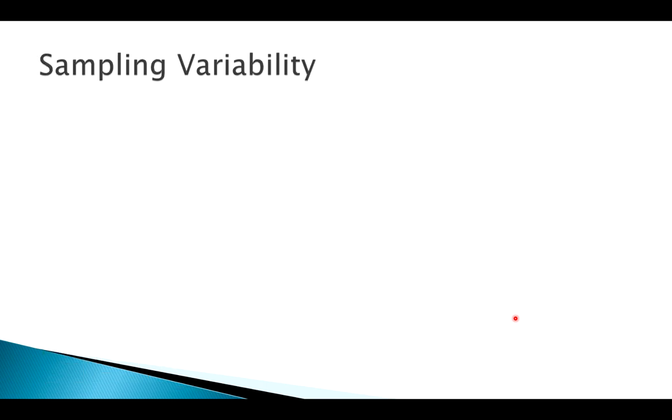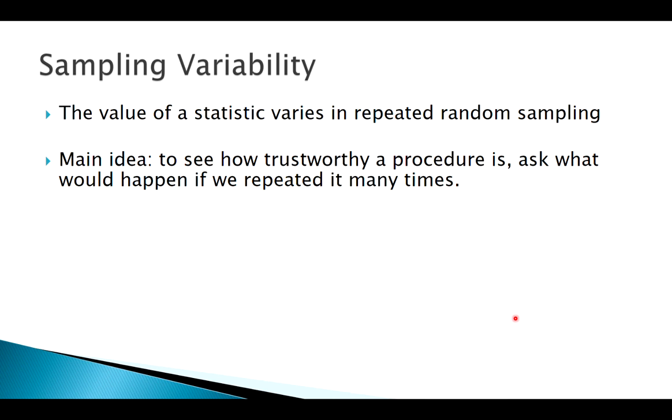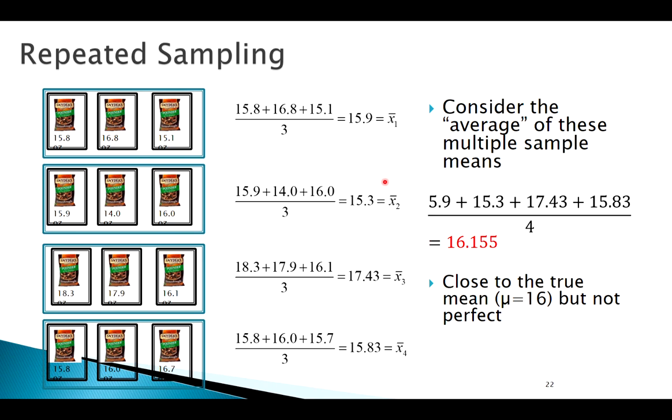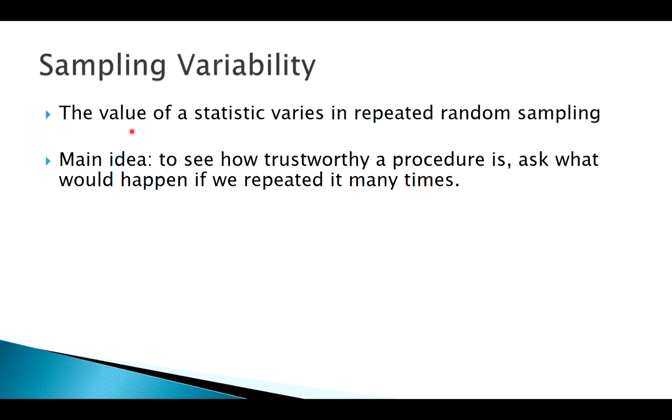This is all to demonstrate this idea of sampling variability. Every time I choose a new sample, the value of that statistic can change. It doesn't mean the value of the actual population parameter is changing. What's changing is the sample that I take and the statistic that I calculate. So, when we did this, we only did it four times. These are small samples. We only had three bucks in our pocket, so we were only able to get three bags of pretzels. But, what really could help us is doing this more and more, possibly with bigger samples to really demonstrate this idea of sampling variability and see what happens.